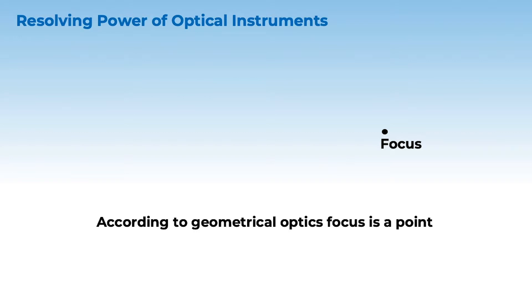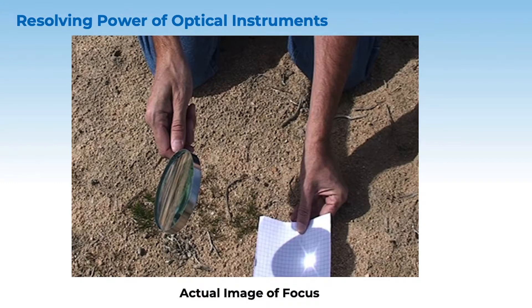According to geometrical optics, focus is a point. Suppose we take a convex lens and pass light through it, theoretically we expect that all the light will converge at a point at the focus. But in reality, all of us must have done this, when we try to focus sunlight on a paper, it doesn't come to a point, it comes to a circular band. This is the real image of a focus, so contrary to what we think, focus actually isn't a point in reality. And this basically is used to define resolving power.